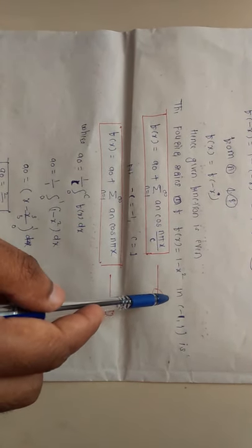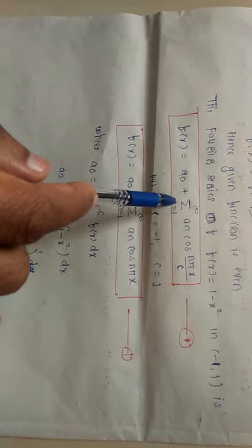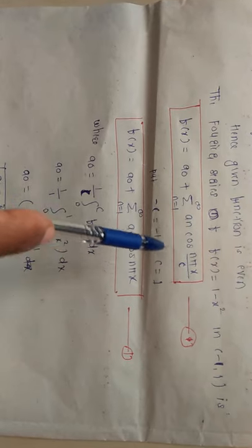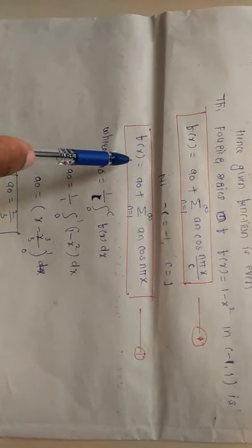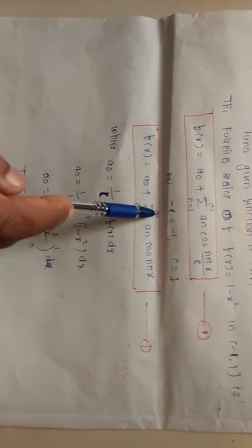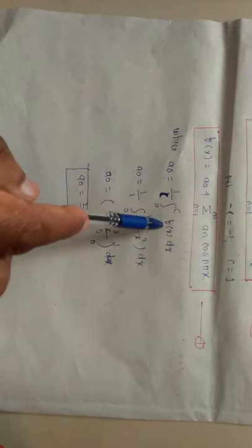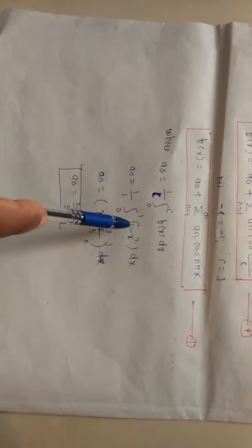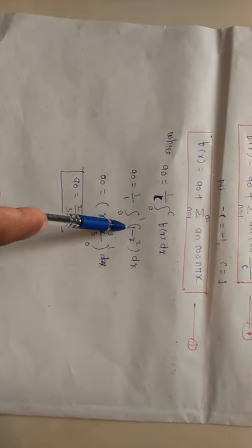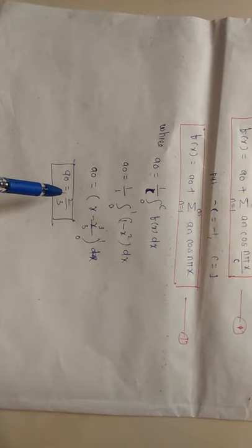Since the function is even, we only need to find the values of a₀ and aₙ; there is no need to find bₙ. The Fourier series for an even function is f(x) = a₀ + Σ(n=1 to ∞) aₙ cos(nπx/c). With c = 1, a₀ = (1/1) ∫₀^1 (1 - x²) dx = [x - x³/3]₀¹ = 2/3.